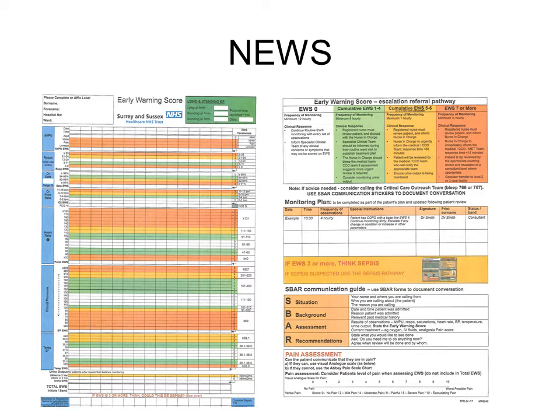Historically, there have been many variations of early warning scores and track and trigger systems, both nationally and worldwide, with varying levels of sensitivity and specificity. In 2012, the Royal College of Physicians identified that having so many different early warning score systems nationally was causing confusion, especially with temporary or rotating staff. Therefore, they developed a national early warning score so that everyone throughout the NHS would be talking a common language with regards to patient deterioration.